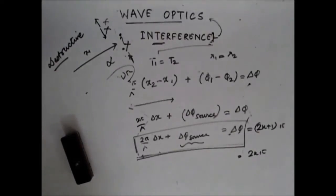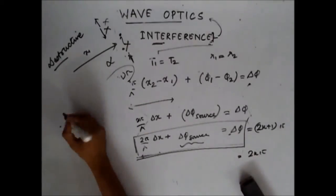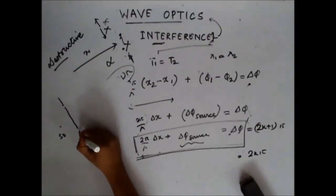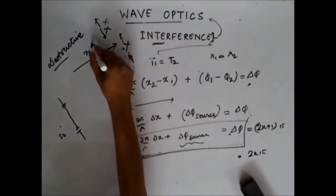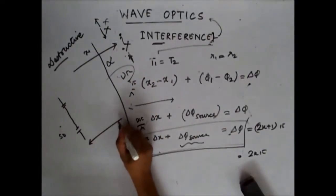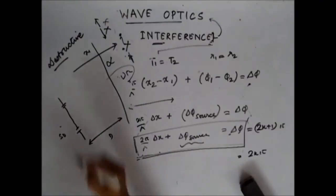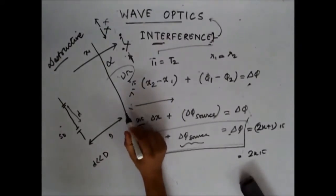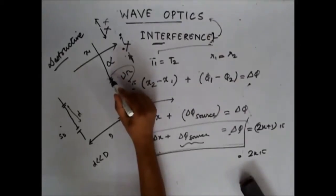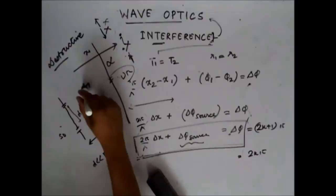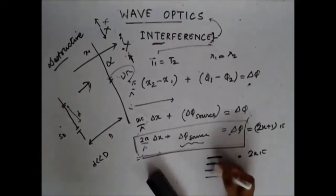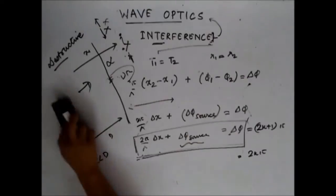Now let's take the case of Young's double slit experiment and understand why we had light bands and dark bands. There was a single source S0 and a board with very narrow slits. At a large distance, there was a screen. This distance D was very large compared to the slit separation d, so d is much less than D. Thomas Young observed alternate dark and white bands formed on the screen.